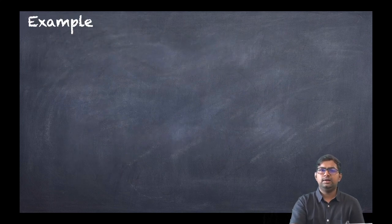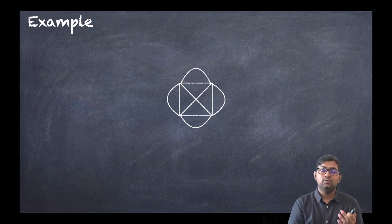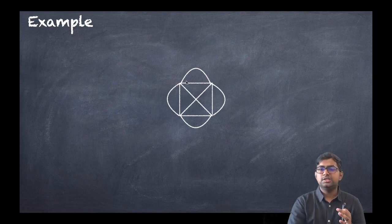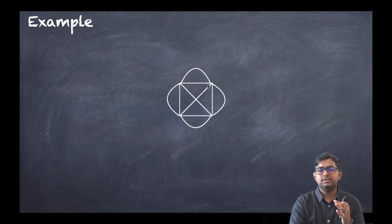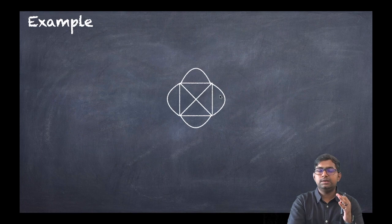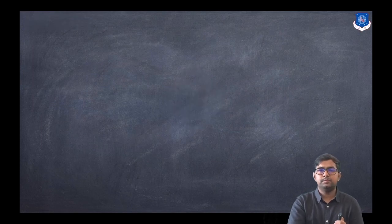You may have seen this type of figure in school: draw such a graph without lifting your pen. This means we need to cover all edges — so is it an Eulerian circuit? The degree of each vertex in this figure is five, which is odd. But by the theorem, an Eulerian circuit requires all vertices to have even degree. Since the degree is odd here, we cannot draw this graph without lifting the pen — it is not an Eulerian circuit.